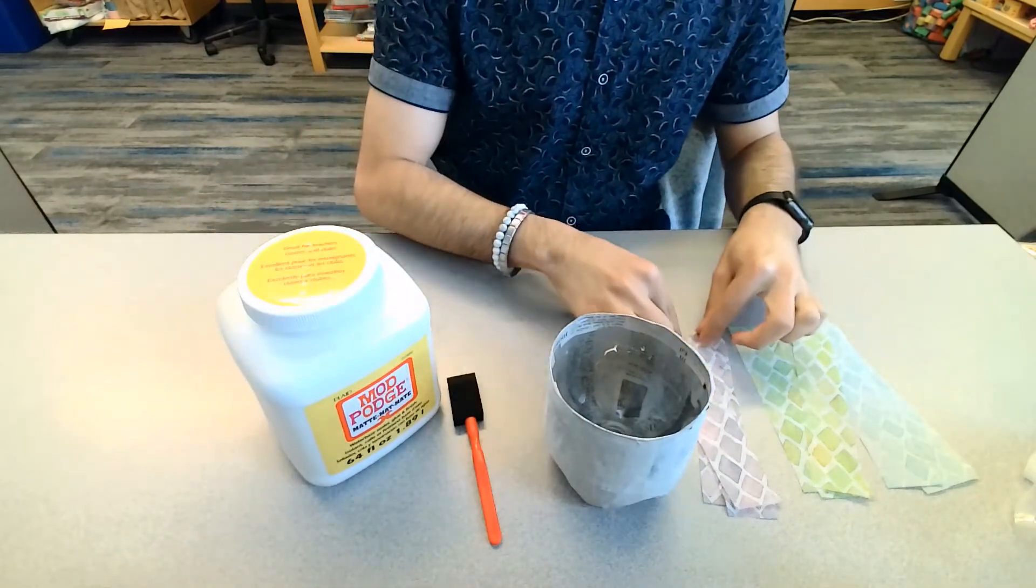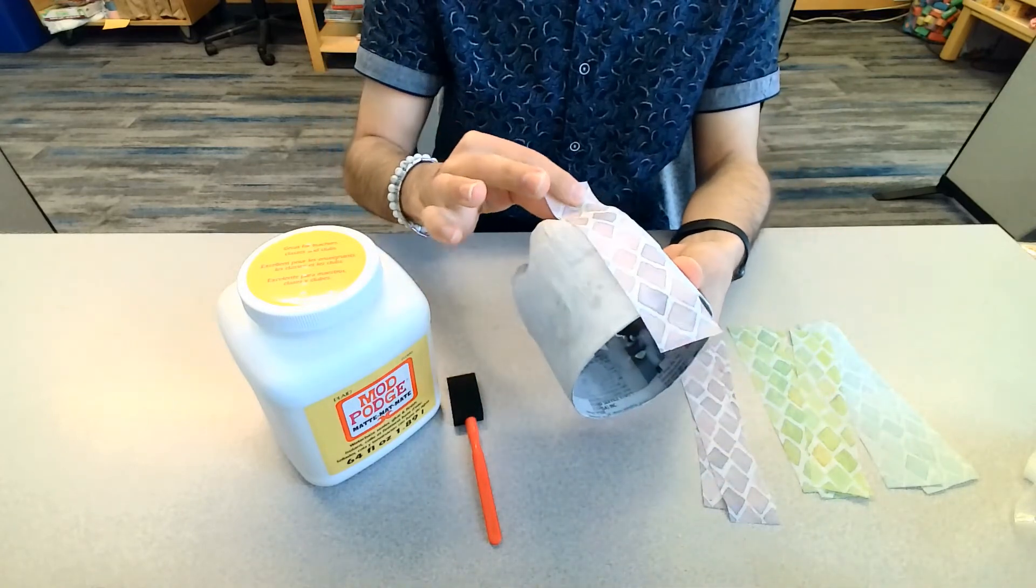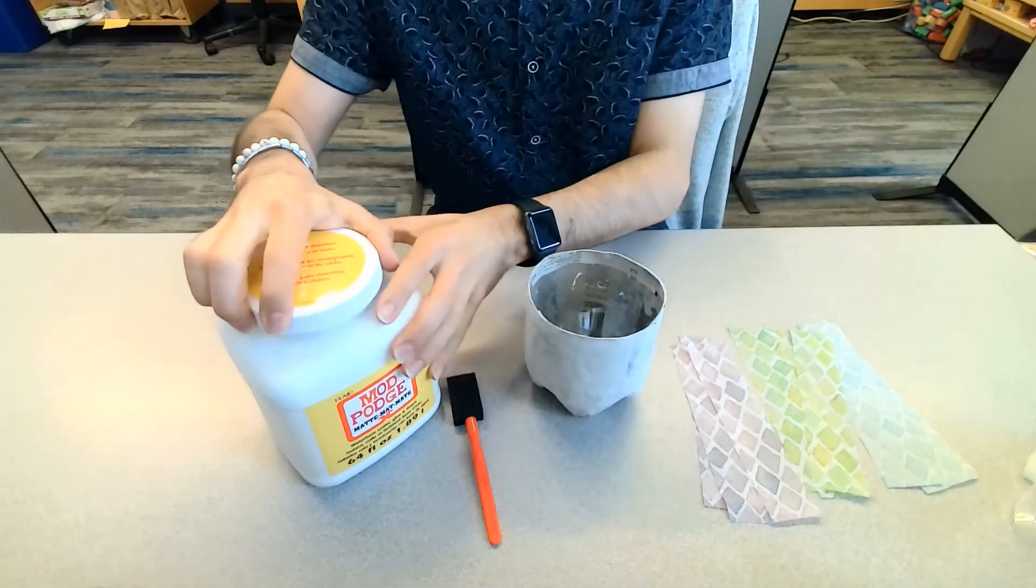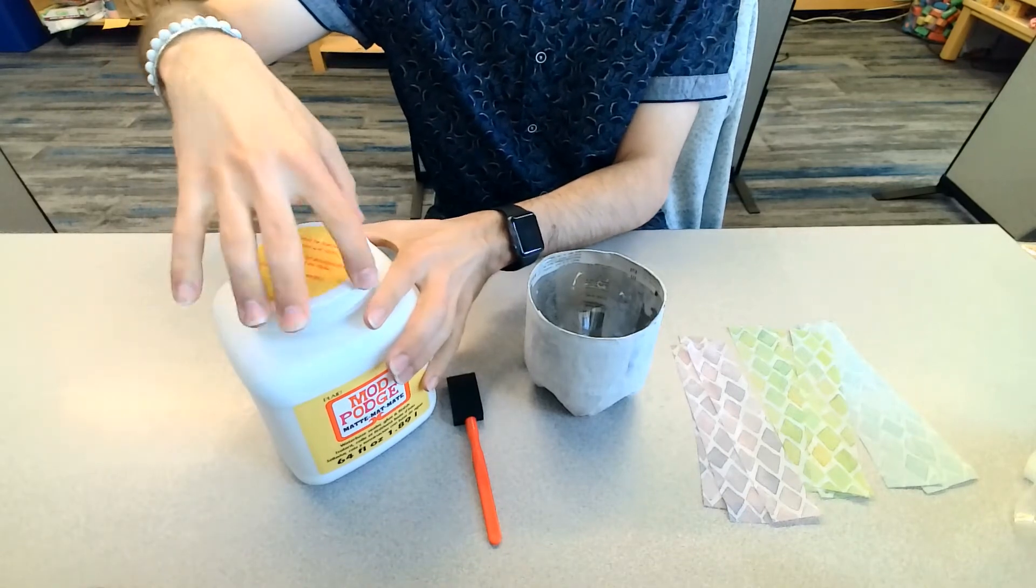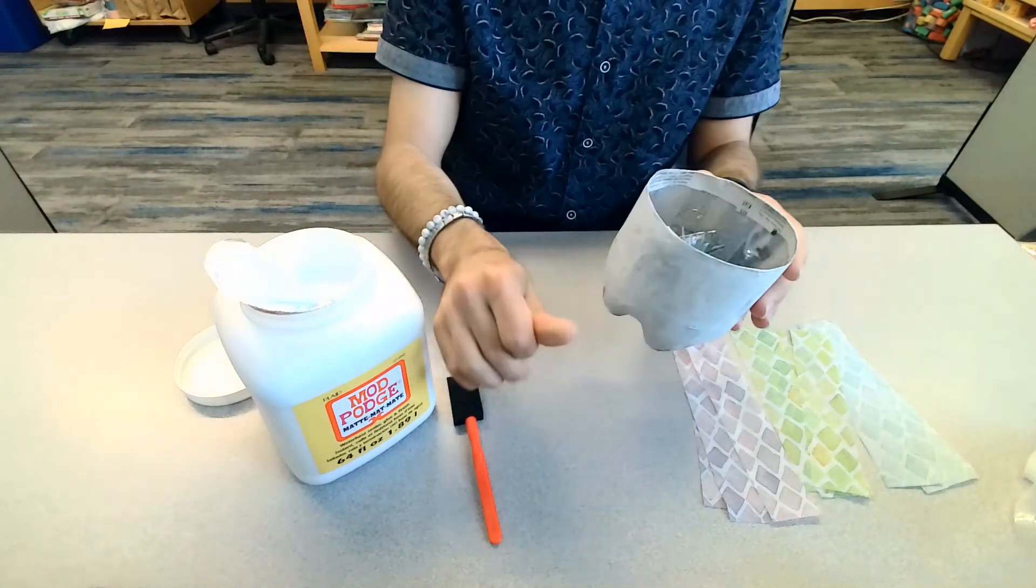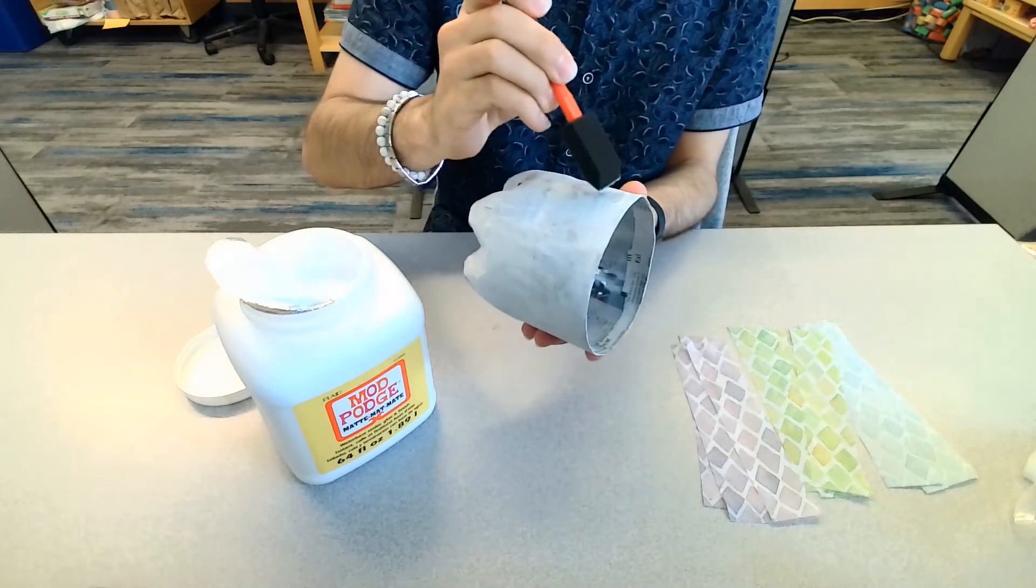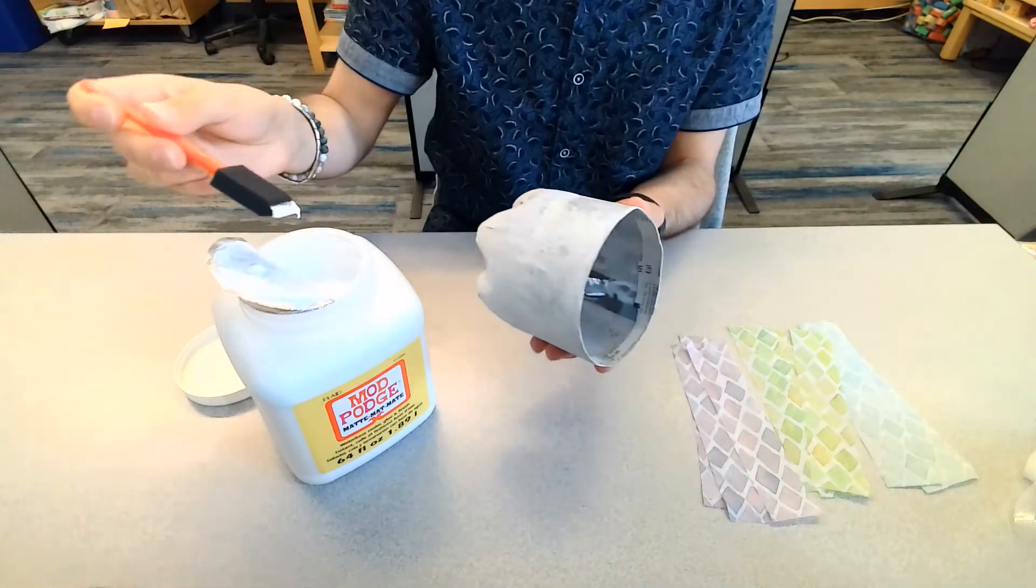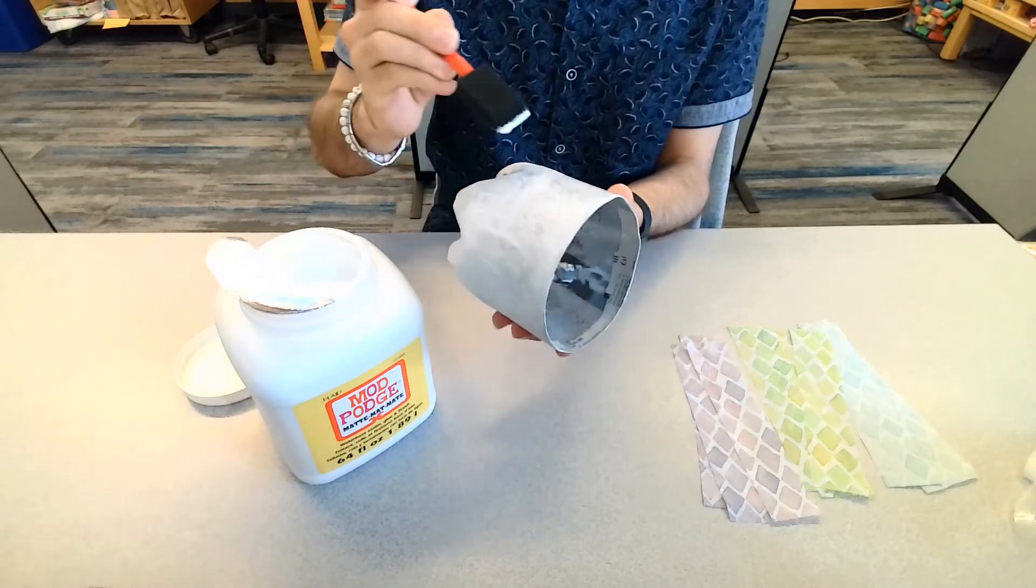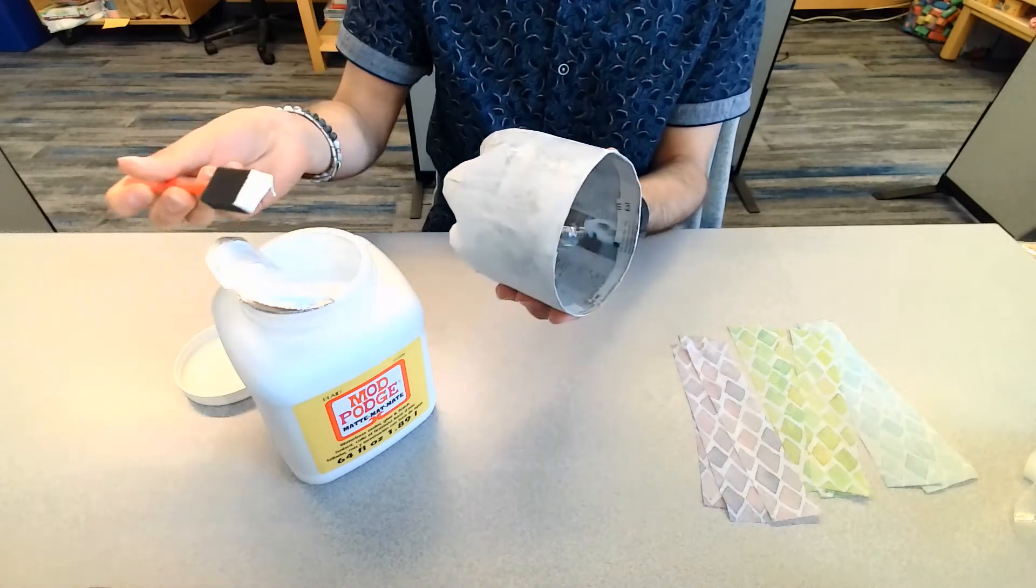So now we're going to be moving on to the Mod Podge decoupage glue and paper napkin step. This is just kind of a decorative step to make the outside of the planter look pretty. In the kits that you've been provided with, there are included assorted colors, including purple, green and blue of the same pattern of napkin. For my own planter, I opted to make use of all of the colors, and I aligned them in a vertical fashion. But you are free to do whatever pattern you want, or use as many or as few of any of the colors included. Or if you have napkins at home that you would rather use for this step, then you're more than welcome to use those.